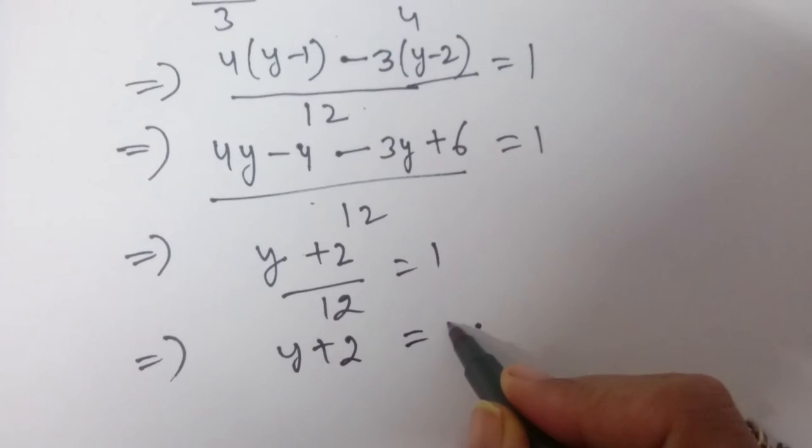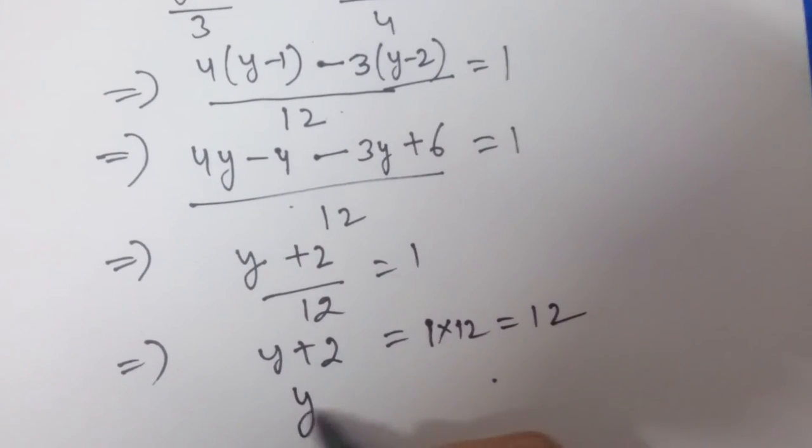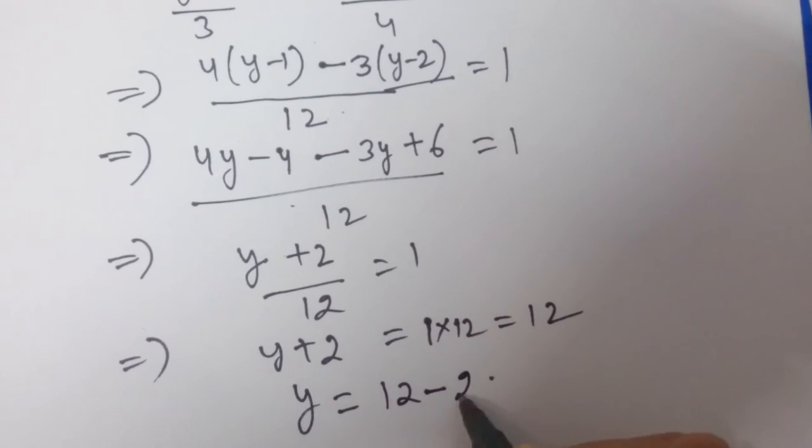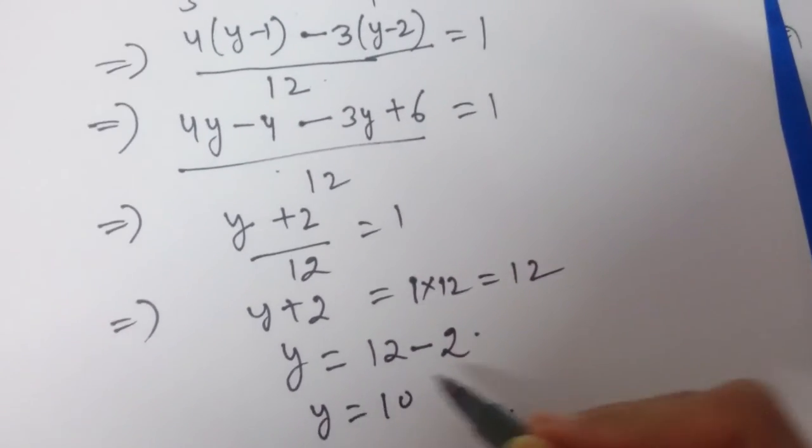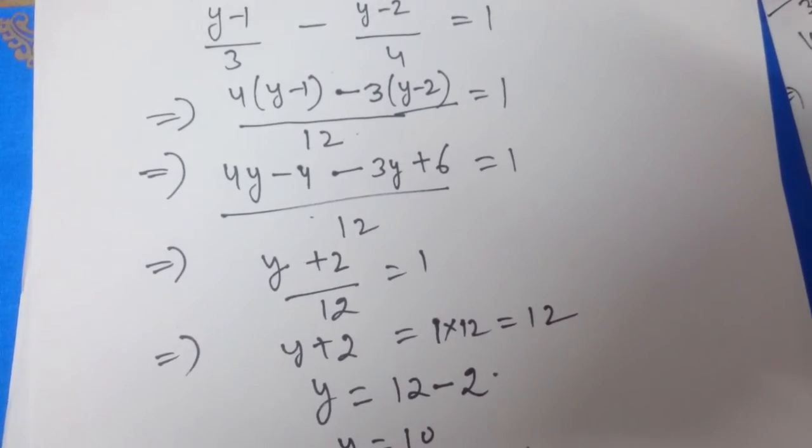This implies y + 2 equals 1 times 12, which is 12. So y will be 12 - 2. Therefore, y = 10 is the solution of the given linear equation.